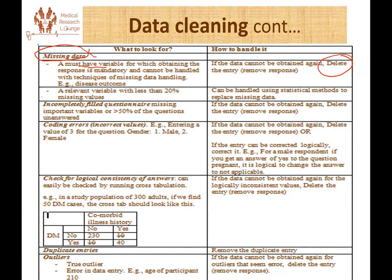When dealing with numeric variables, if the variable has missing values of less than 20%, there are statistical methods for replacing the missing values — for example, replacing them with the mean of the remaining values. There are statistical methods to replace missing data for a numerical variable if the variable has less than 20% missing values from the entire dataset.